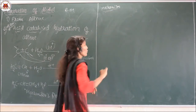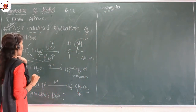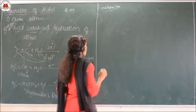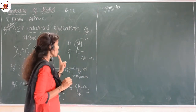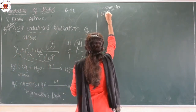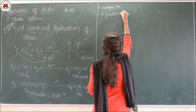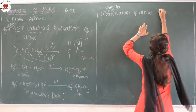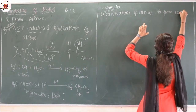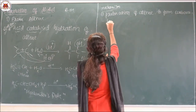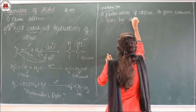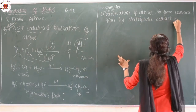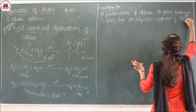This mechanism is what they are going to ask you — write the mechanism for how we convert alkene into alcohol. This is the question asked for three marks. This mechanism involves three steps. The first step is protonation of the alkene to form carbocation by electrophilic attack of H₃O plus.